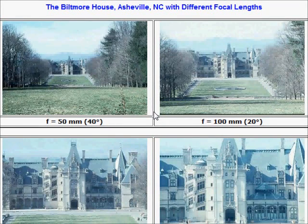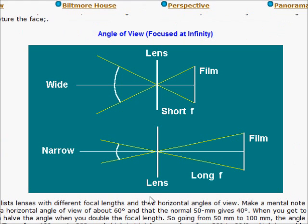Doc here with another physics tutorial for Physics 101 Light and Visual Phenomena. Our topic is the Biltmore House of Asheville, North Carolina and different focal length lenses. Before we look at these photographs and study them, let's consider the theory first.